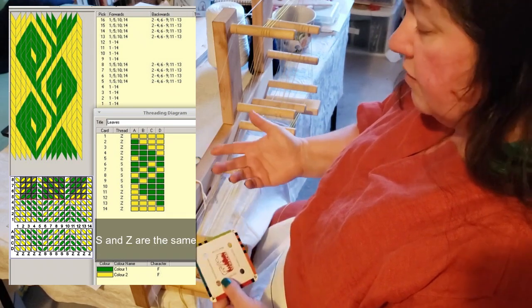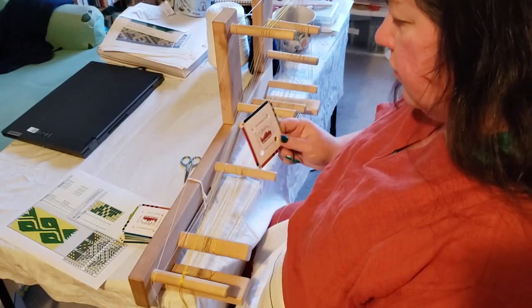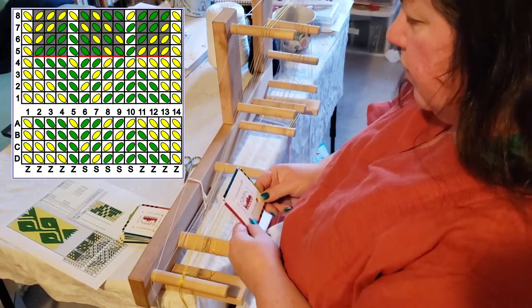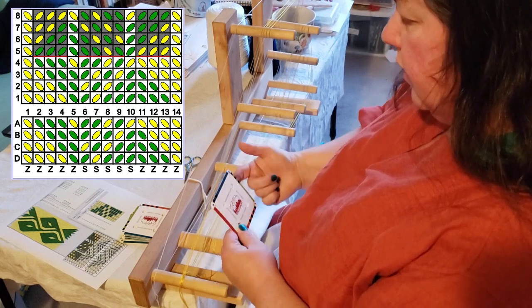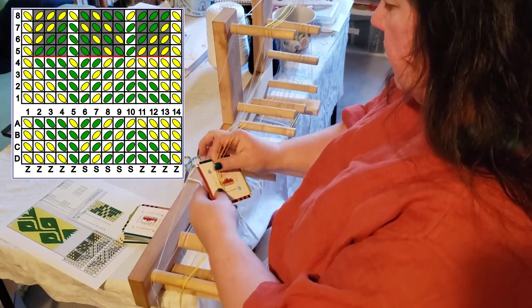Essentially, Z is Z. A, B, C, D is correct, but their chart is kind of upside down. Okay, so for card number one, it's Z-threaded, so we're going to go through the front of the card as the card is facing me, and all four threads are yellow, so that's easy enough.